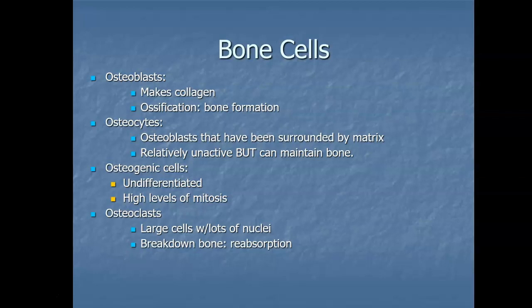We have a third type of cell called the osteogenic cell. These cells are undifferentiated — like stem cells — and they go through mitosis very rapidly; they are actually the only bone cell that can divide. Immature osteogenic cells are found deep in the layers of the periosteum and in the bone marrow, and as they mature they differentiate into osteoblasts, which then make the matrix and become osteocytes.